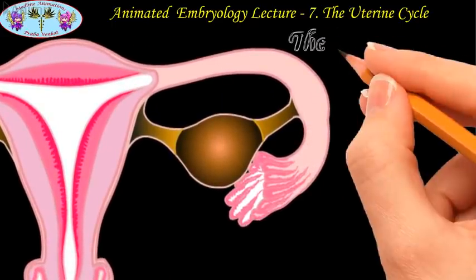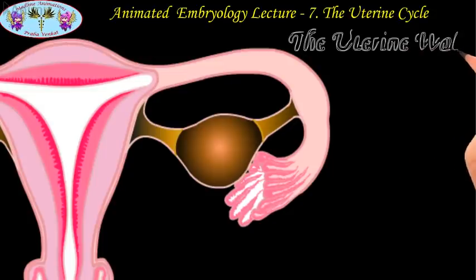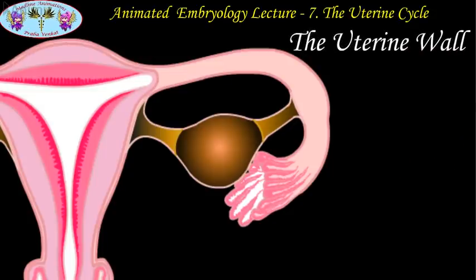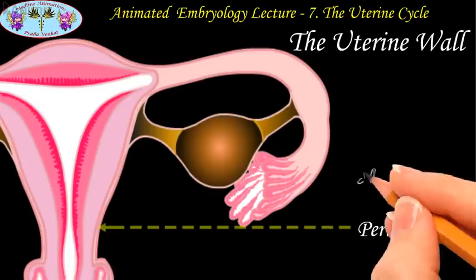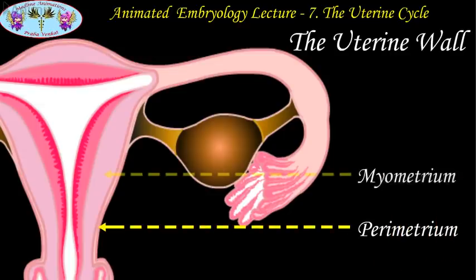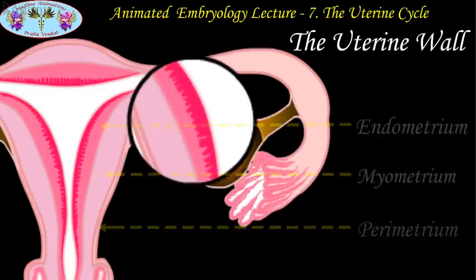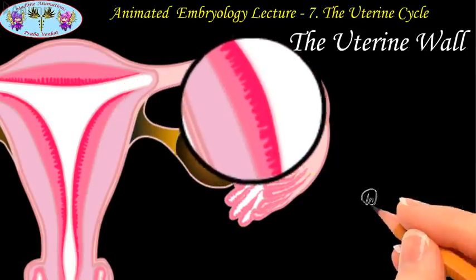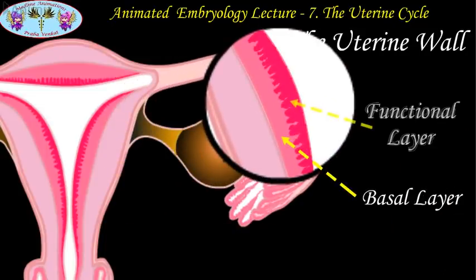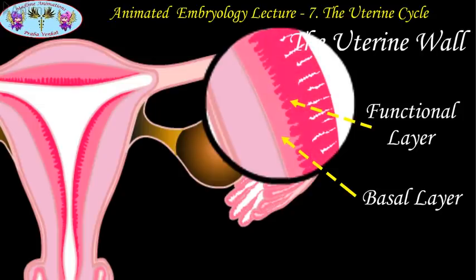The wall of the uterus is made up of three layers: from outside to inside they are the perimetrium, the myometrium, and the endometrium. The endometrium in turn is divided into two layers — the basal and the functional layers. Approximately every 28 days, the functional layer of the endometrium undergoes cyclic changes as a preparation for pregnancy.